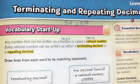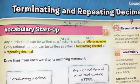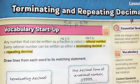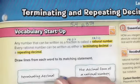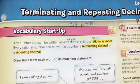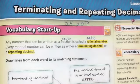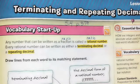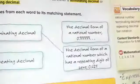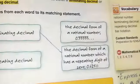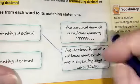When we have a terminating decimal, it is a decimal that when we divide it out or write it, it terminates or it ends. The decimal form of a rational number has a repeating digit of zero — in other words, it would have a zero repeating. So it terminates, it finishes.